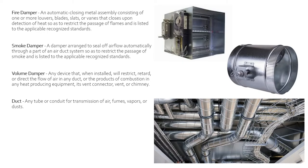Fire damper — this is the automatic closing metal assembly consisting of one or more louvers, blades, slats, or vanes that close upon detection of heat so as to restrict the passage of flames, and is listed to the applicable recognized standards. They have what are called fire-rated walls — areas that need to be partitioned off so they don't burn in case of fire. Those areas still have to be conditioned, so you have to have duct running through them. Examples would be stairwells and mechanical rooms. Depending on the system, either a fire or smoke damper is used — as soon as they sense heat or smoke, they'll shut closed so as not to introduce smoke into that area.